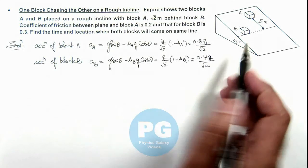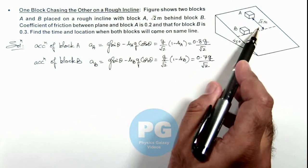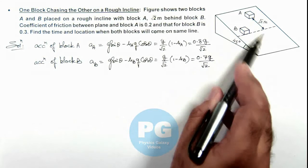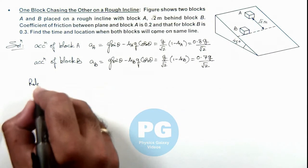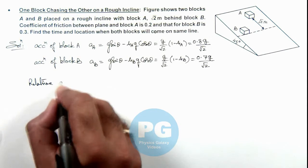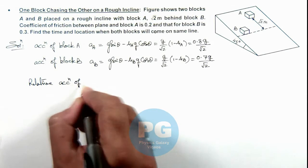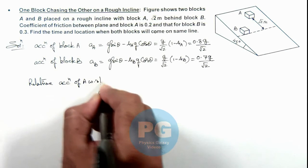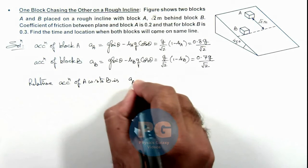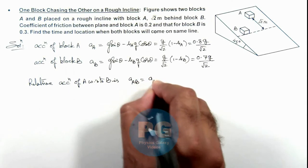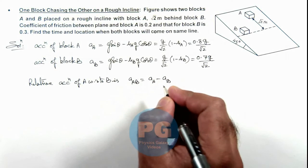Now we can see A is accelerating more compared to B so finally it'll catch B. So here we can calculate the relative acceleration of A with respect to B. If we calculate it, acceleration of A with respect to B we can write as aₐ minus aᵦ.